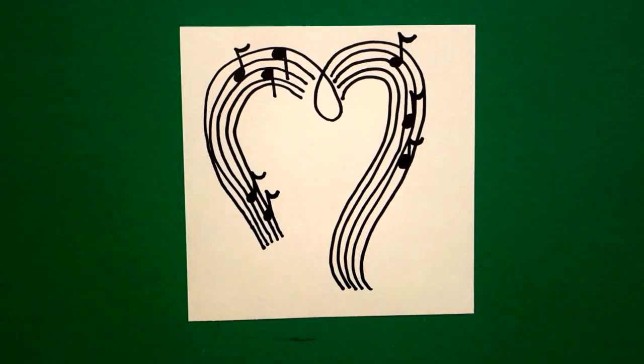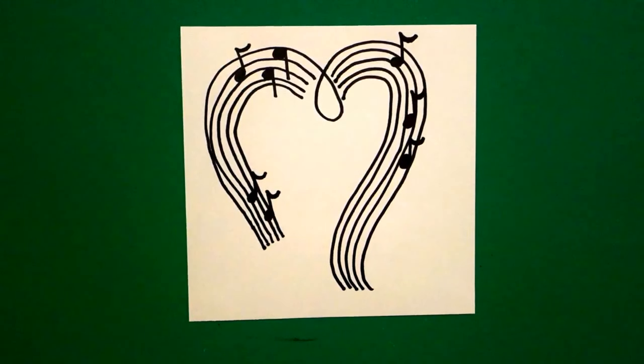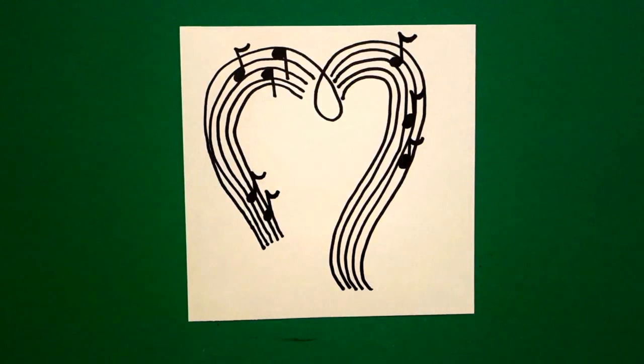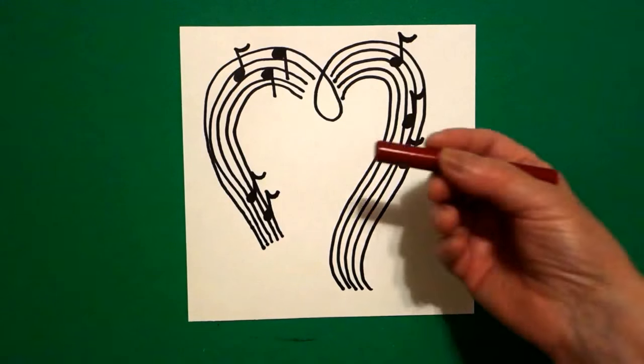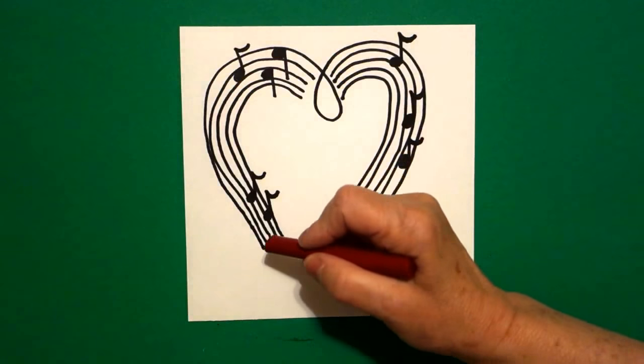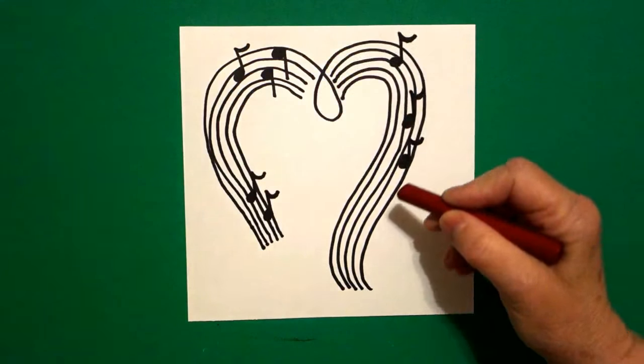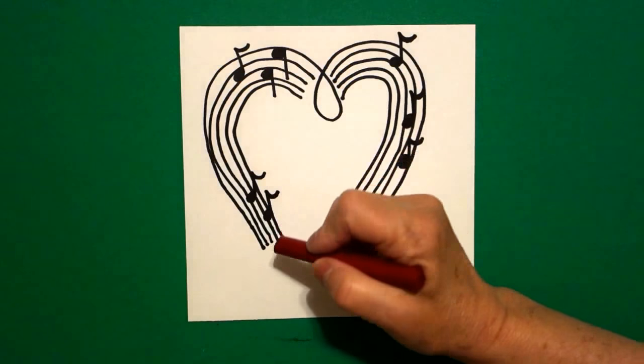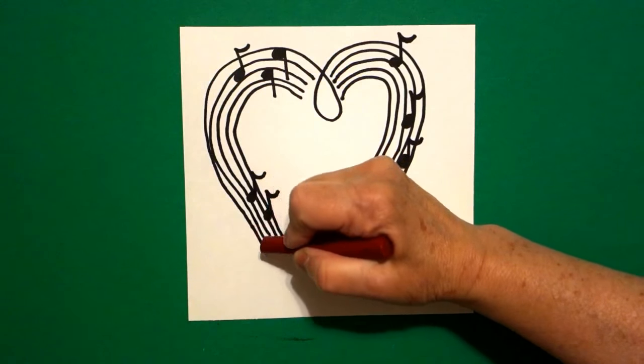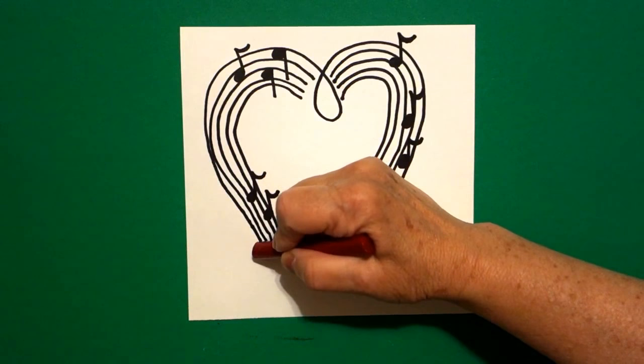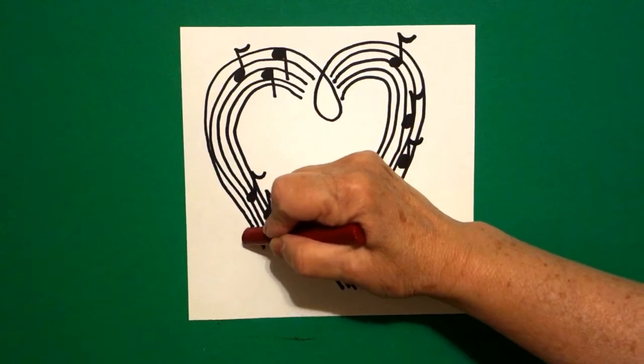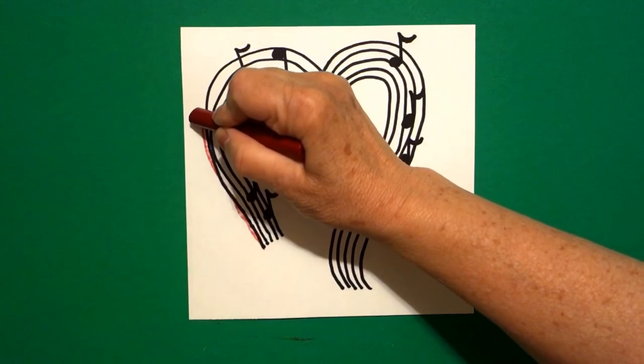Now let's see how we're going to color this. Okay, this is super easy because all I'm going to do is an outline of color to just add a little pop to it. So starting on the bottom left with my big fat red crayon, I'm going to mimic the lines I just drew.